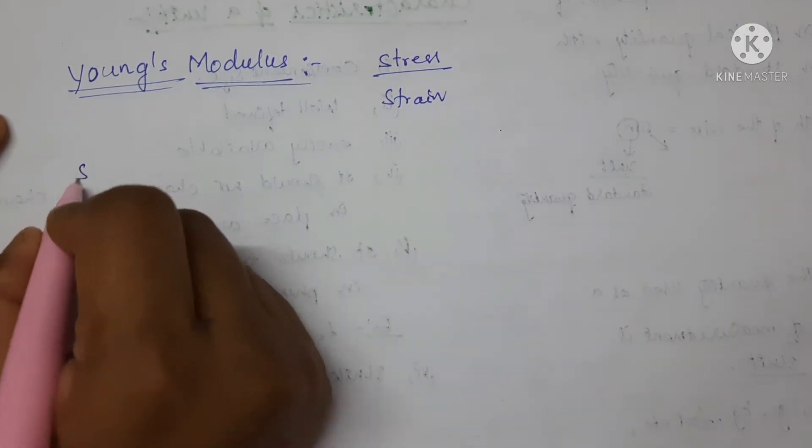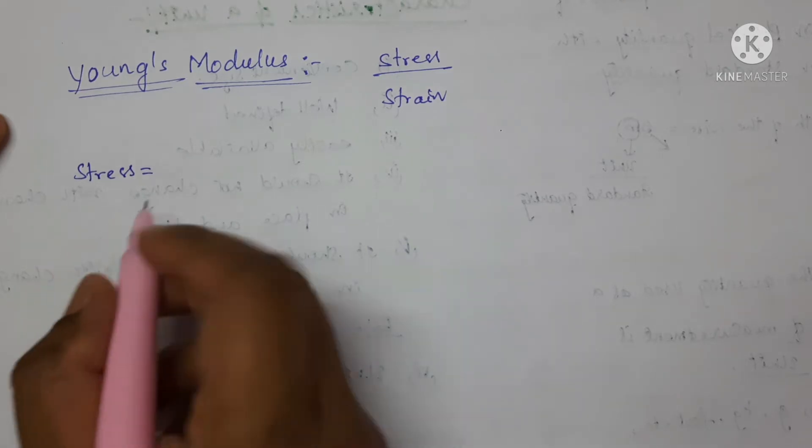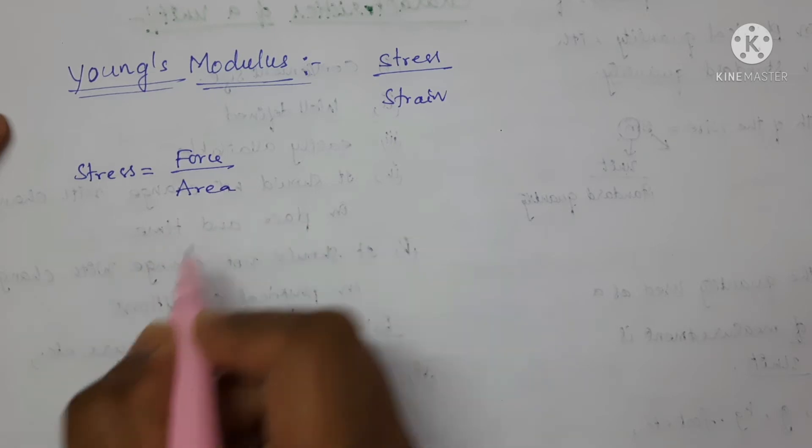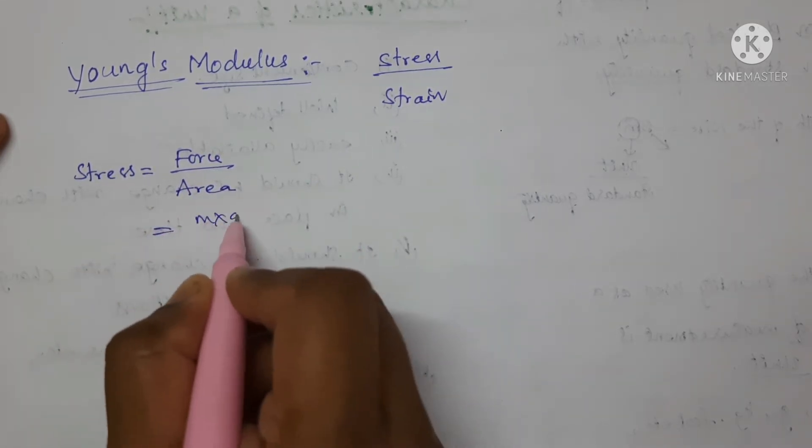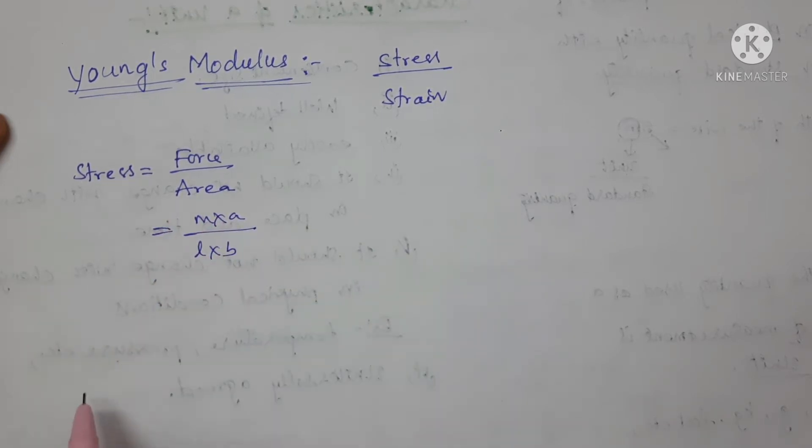First, let us see for stress. Stress is equal to force upon area. Now, write the formula for force. Force is equal to mass into acceleration and for area length into breadth.